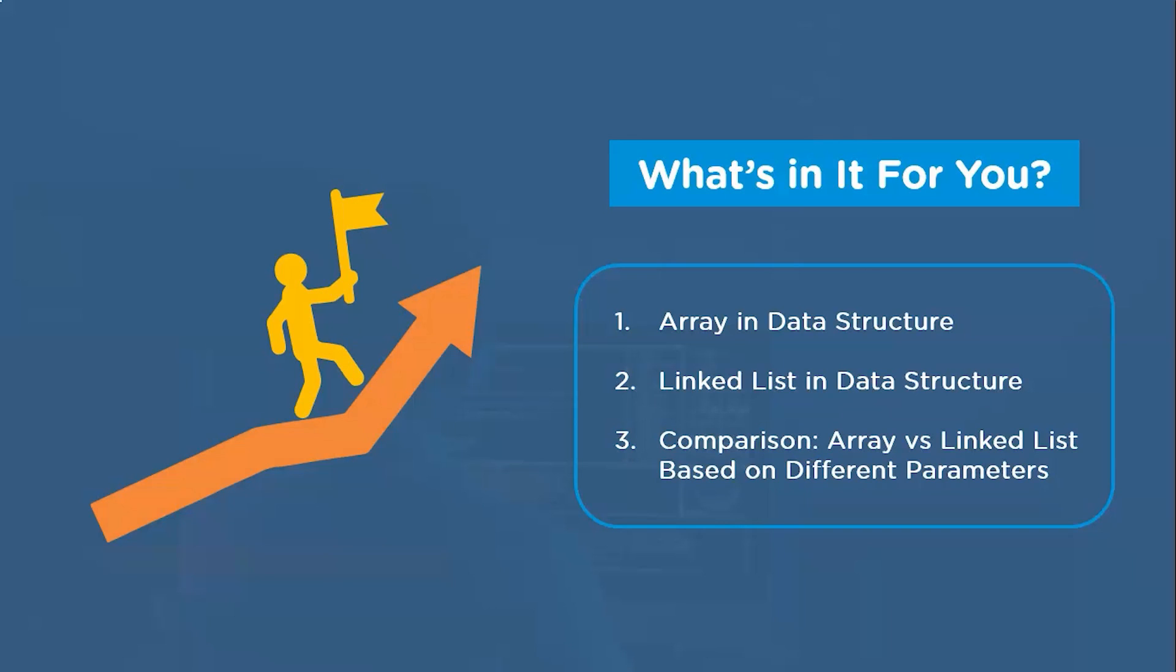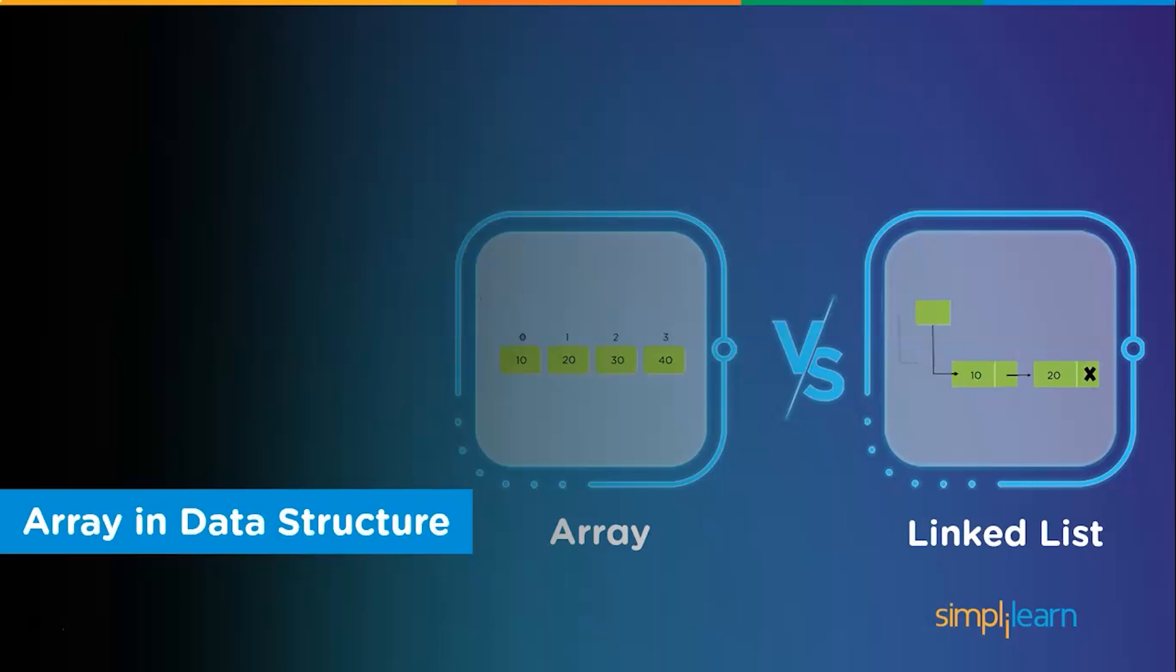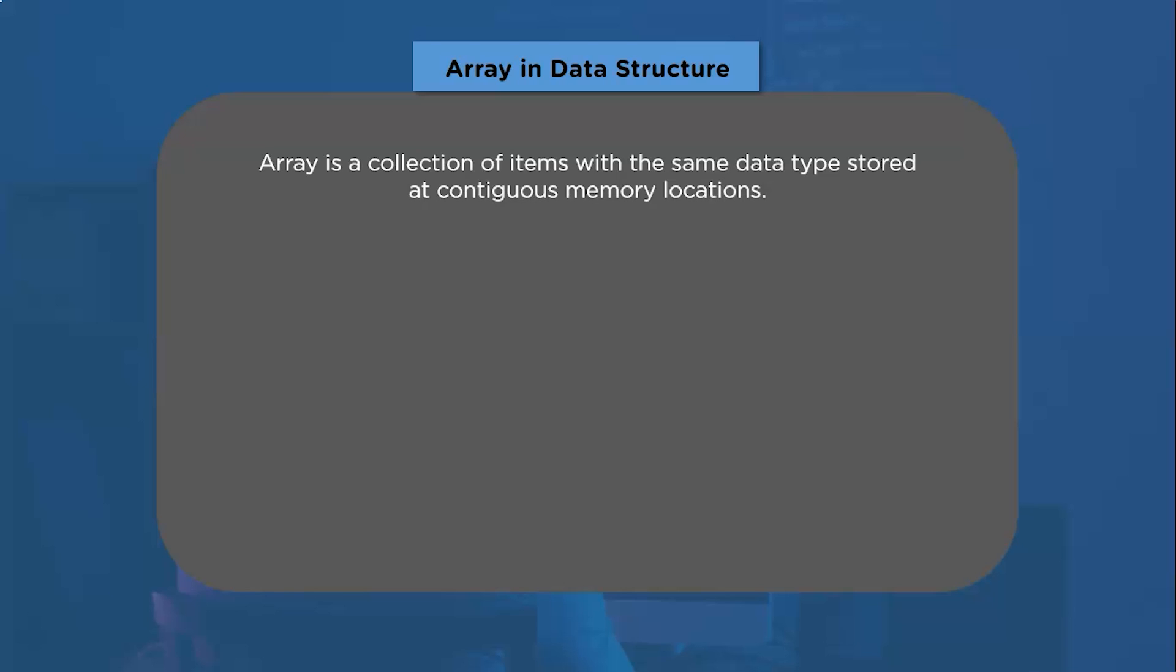I hope the agenda is clear for today's session. Now, let's get started with our first topic which is Array in Data Structure. Basically, an array is a data structure that contains homogeneous elements. What I mean by that is an array will only store the elements having the same data type. Additionally, the memory location in the case of arrays is static and contiguous. That means a declaration of an array must be made at compile time.